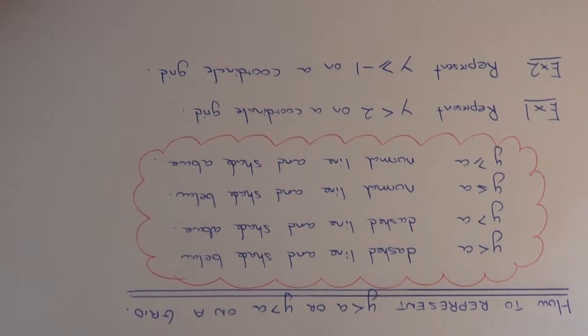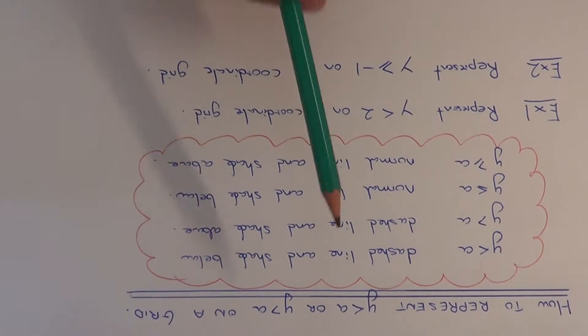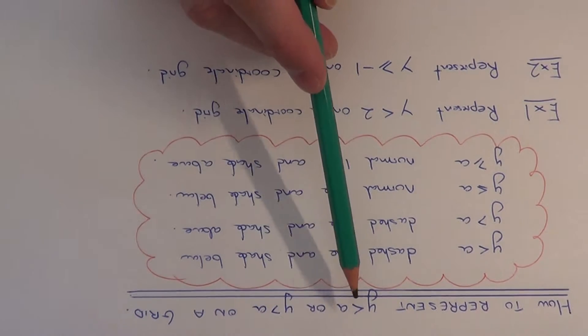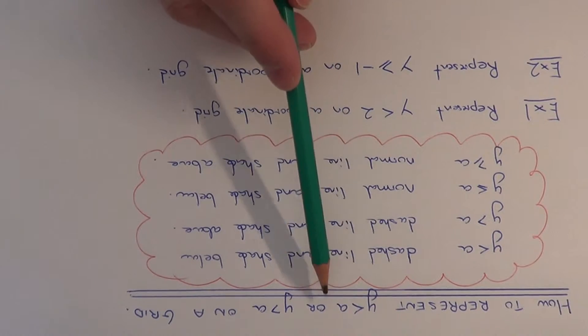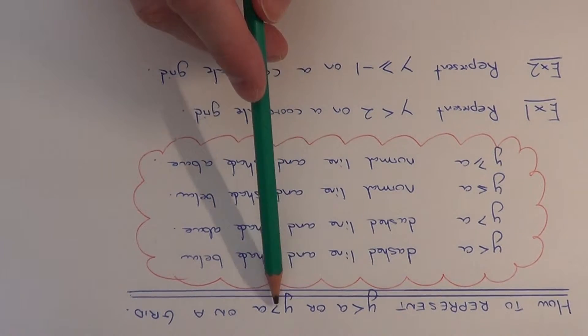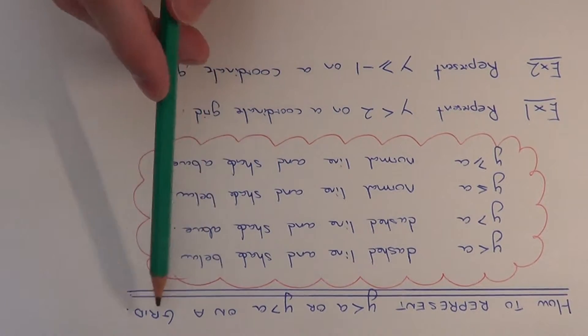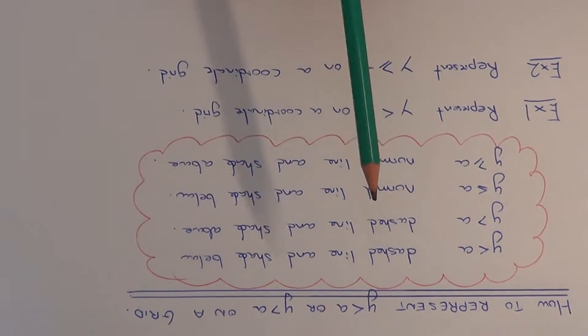Today I'm going to show you how to represent inequalities which take the form y is less than a, or y is more than a, on a coordinate grid.